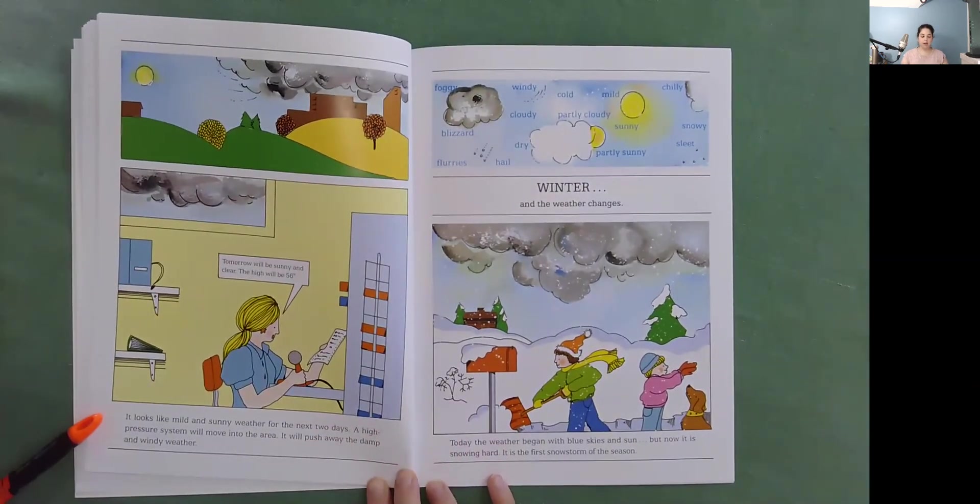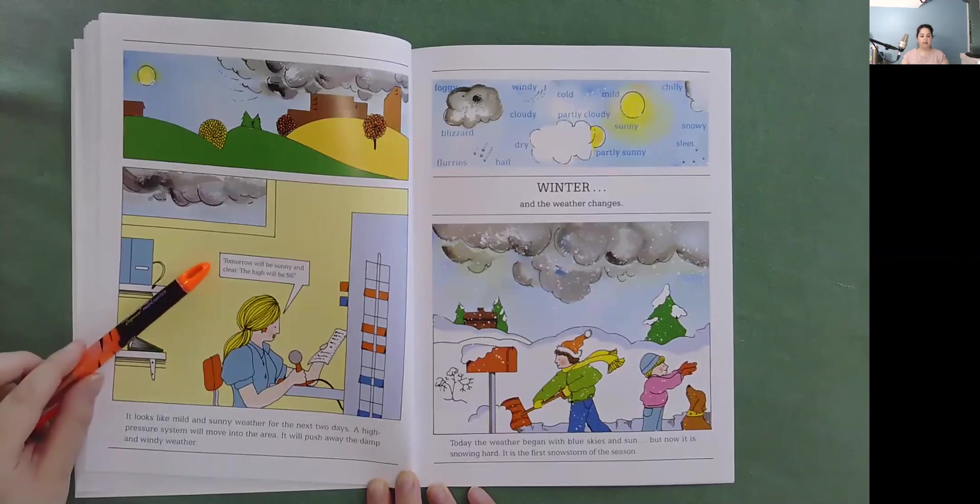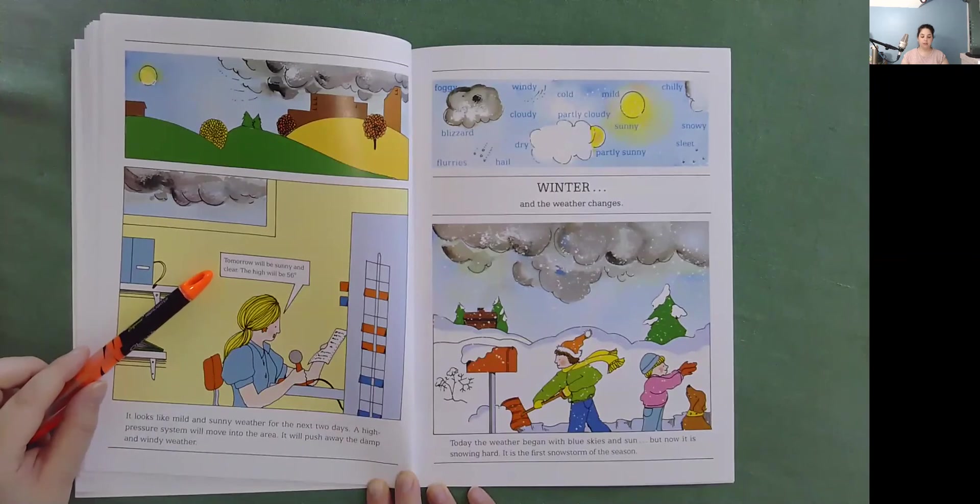It looks like mild and sunny weather for the next two days. A high pressure system will move into the area. It will push away the damp and windy weather. Here the forecaster is saying tomorrow will be sunny and clear. The high will be 56 degrees.